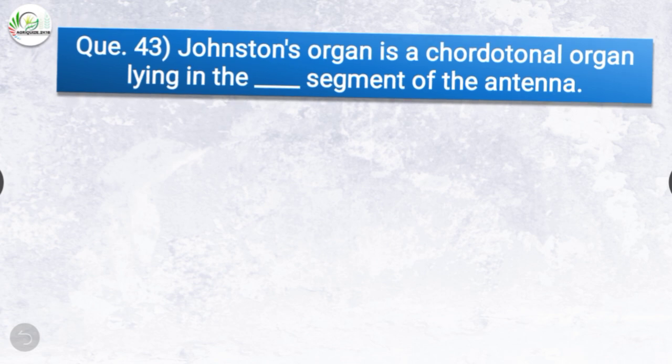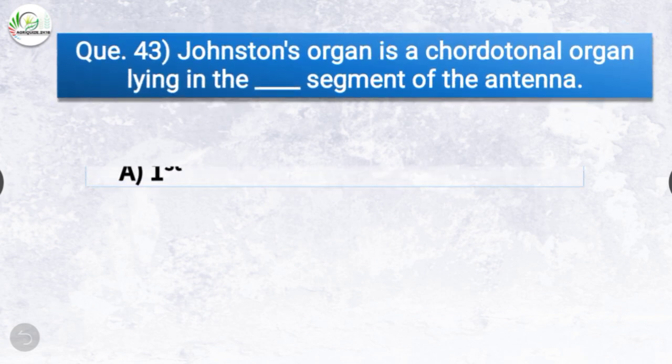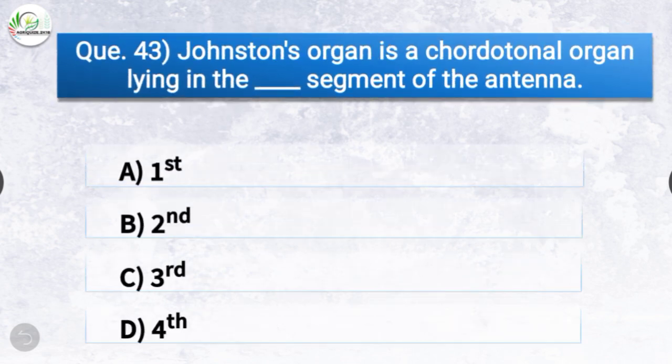Question number forty-three: Johnston's organ is a chordotonal organ lying in the dash segment of the antenna. The options are first, second, third, or fourth. The correct answer is option B, second — Johnston's organ is a chordotonal organ lying in the second segment of the antenna.